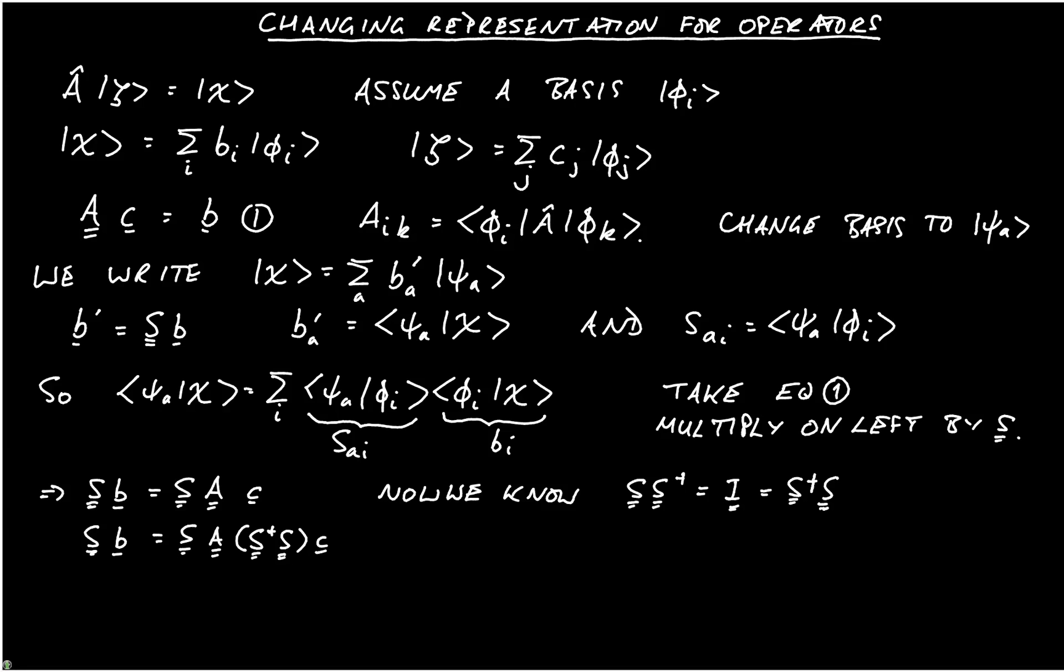Now I'm going to shift the brackets, and so we have S acting on b is equal to brackets S A S dagger, and then we have S acting on C. But now we know already that S on b is actually b', and we can assume that A' is just the representation of A in the new basis, and we're going to act with c'. And this is with A' equal to S A S dagger.